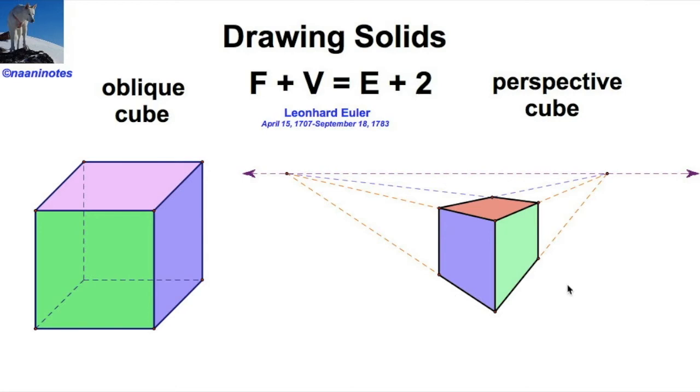That gives you three of the six visible faces. We could do the hidden lines on this as well. You've got your six faces, your eight vertices, and twelve edges. That works out beautifully with F + V = E + 2.